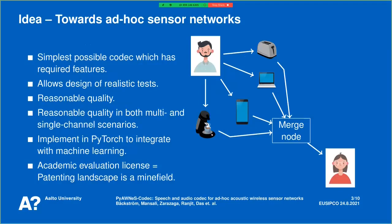The idea we have is to do the simplest possible codec which has the features to basically provide a proof of concept for ad hoc sensor networks, showing that we can do coding and it does improve quality. It should be a platform for future tests, allowing design of realistic tests to make it usable. It should have reasonable quality — not state-of-the-art — but good enough while being simple, and good enough in both multi- and single-channel scenarios.